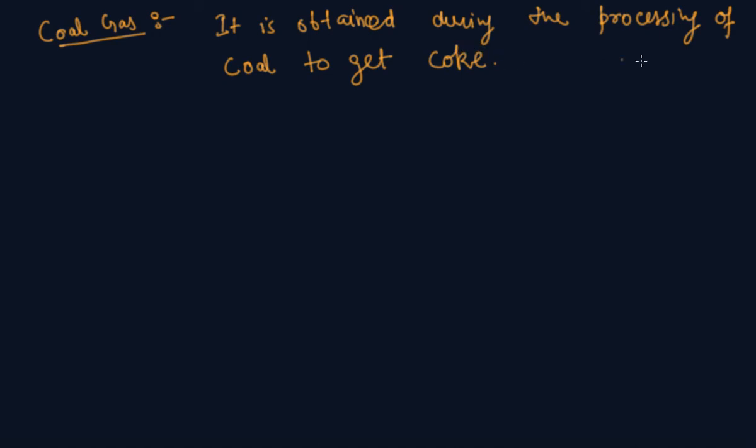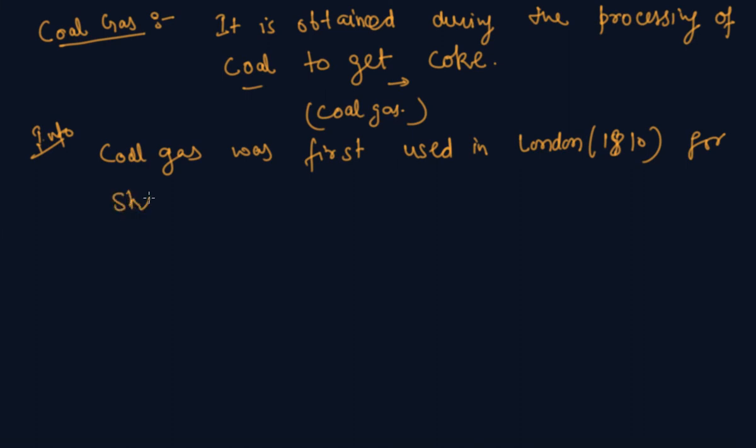So whenever the coal is converted to coke, a coal gas is also formed. So if you know, just for info, coal gas was first used in London in 1810 for street lighting, and in New York in 1820.